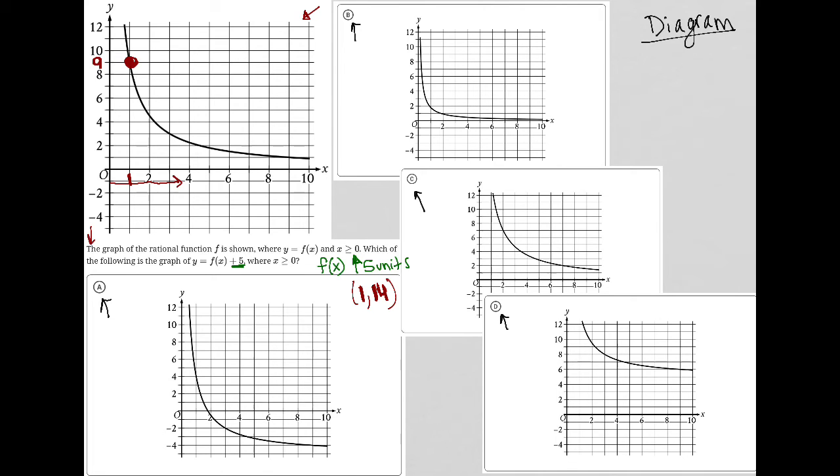So for choice A, I have 1 comma 4. So that's no good. For choice B, I have 1 comma 2. So that's also no good. For choice C, I have 1... I can't tell. Maybe that does cross at 14. So maybe C is good. And for choice D, my 1 also, I can't tell where that crosses. Maybe choice D is good as well. Now let me choose another point and do the exact same thing.